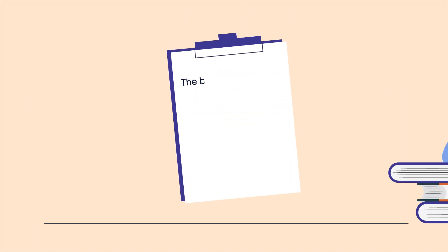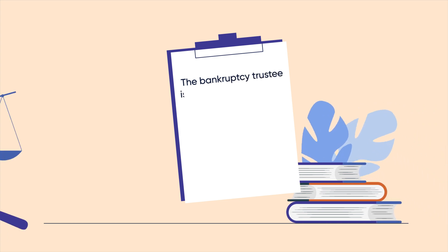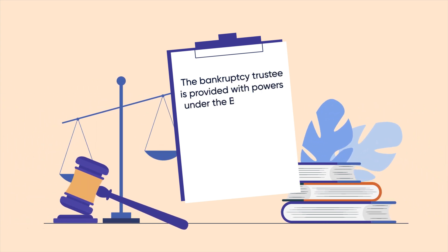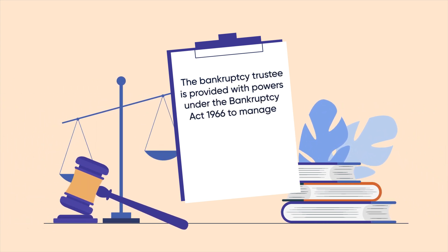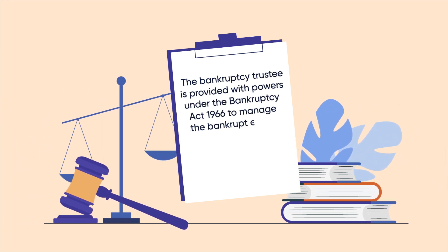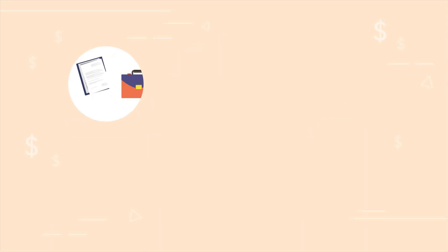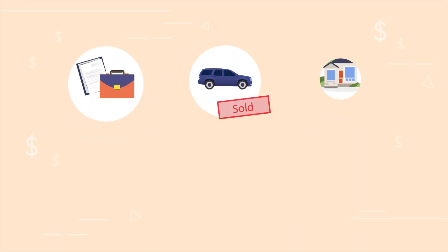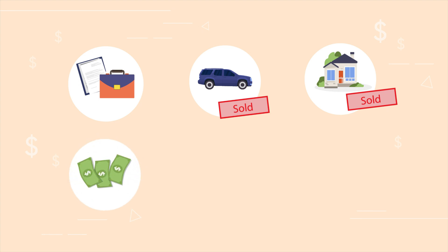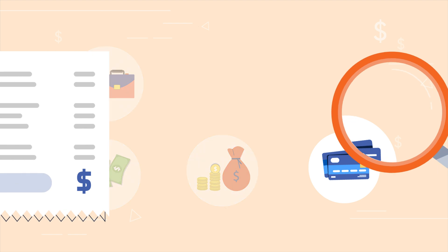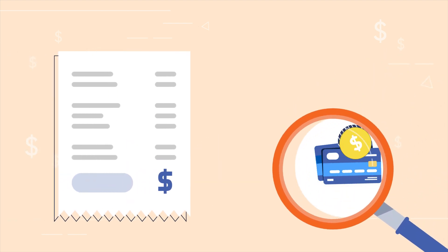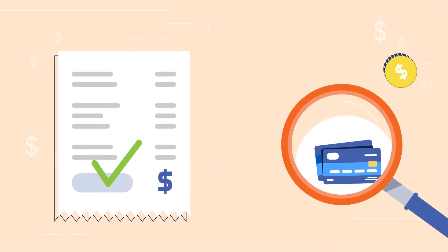The bankruptcy trustee is provided with powers under the Bankruptcy Act 1966 to manage the bankrupt estate. Some of these powers include selling off certain assets that the individual has to pay off their debt, and reviewing the individual's income to assess whether they are liable to make compulsory contributions if their income exceeds certain thresholds.